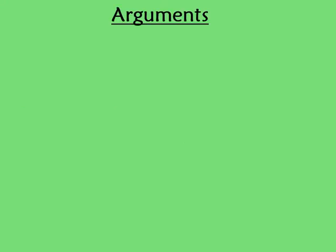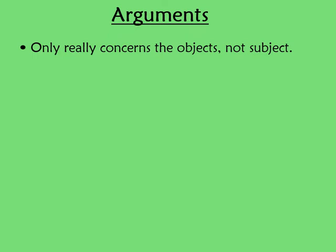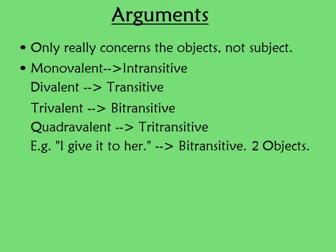Just a quick note: you may have heard of a verb's arguments. The difference is that arguments do not include the subject, only the objects. Instead of words ending in '-valent,' they end in '-transitive.' So bivalent is intransitive, trivalent is transitive or bitransitive, and quadravalent is tri-transitive. But valency and arguments are two extremely linked concepts — if you ever hear about arguments, just know it only includes the objects, not the subjects.